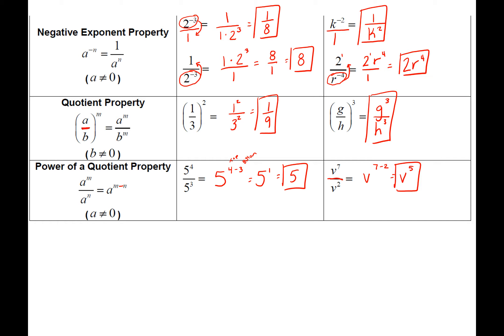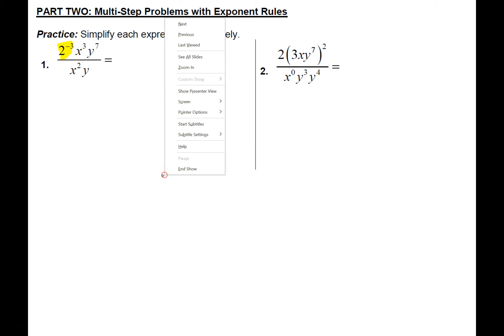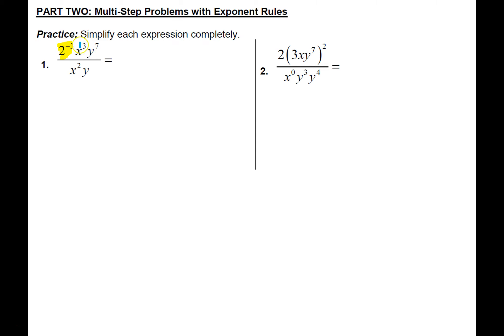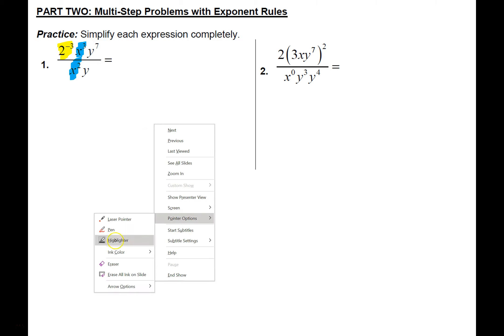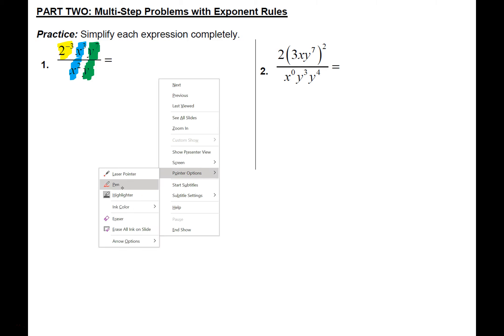All of these rules by themselves are pretty straightforward. What gets challenging is when we start having multi-step or multi-rule problems. Let's look at a couple where we put together several rules to completely simplify. Looking at the first problem, I see a negative exponent on a base, an x in both the numerator and denominator, and a y in both numerator and denominator. Let's take this step by step — let's do the negative exponent first.